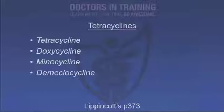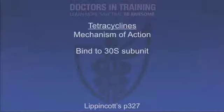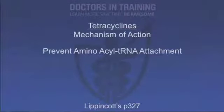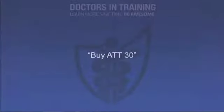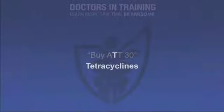Tetracyclines include tetracycline, doxycycline, minocycline, and demeclocycline. Their mechanism of action: they are bacteriostatic, have only limited CNS penetration, bind to the 30S subunit, and prevent aminoacyl tRNA attachment. Returning to our mnemonic 'buy at 30, sell at 50,' the T in ATT stands for tetracyclines — they bind to the 30S.